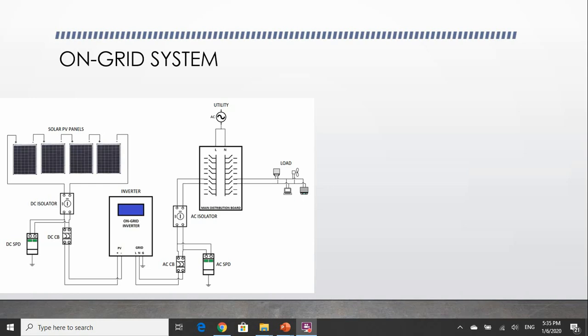Let's take a closer look at the on-grid system. The on-grid system is the simplest and the cheapest to install as it only requires two main components: the solar panels and the on-grid inverter. As mentioned, the on-grid system is still connected to the power grid — the utility. If the load power requirement is too high, it will import power from the grid. And if the solar power system generates excess power, it will export this power back to the grid and the tariff will be paid to you, assuming that you have applied for net metering.